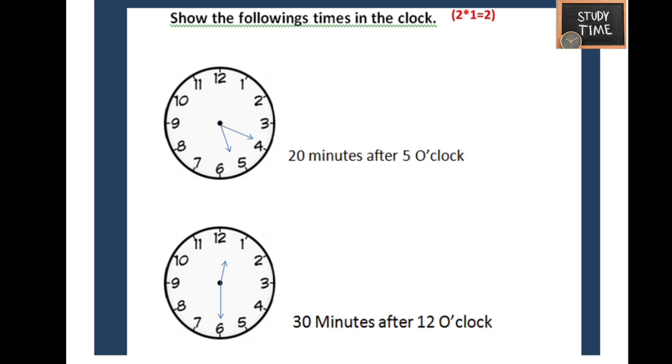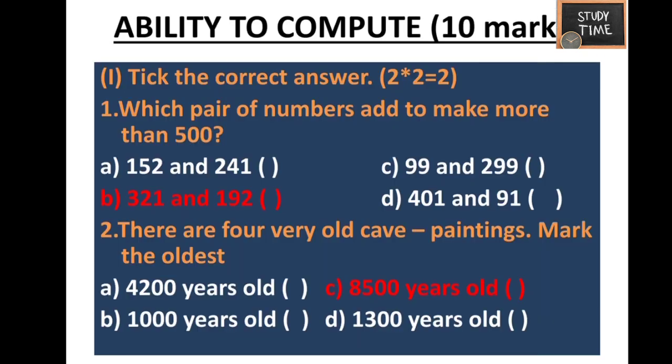20 minutes after 5 o'clock is 5:20. 30 minutes after 12 o'clock is 12:30. Which pair of numbers adds to make more than 500? The answer is 321 and 192. Which is oldest? 8500 years — oldest among the four given.